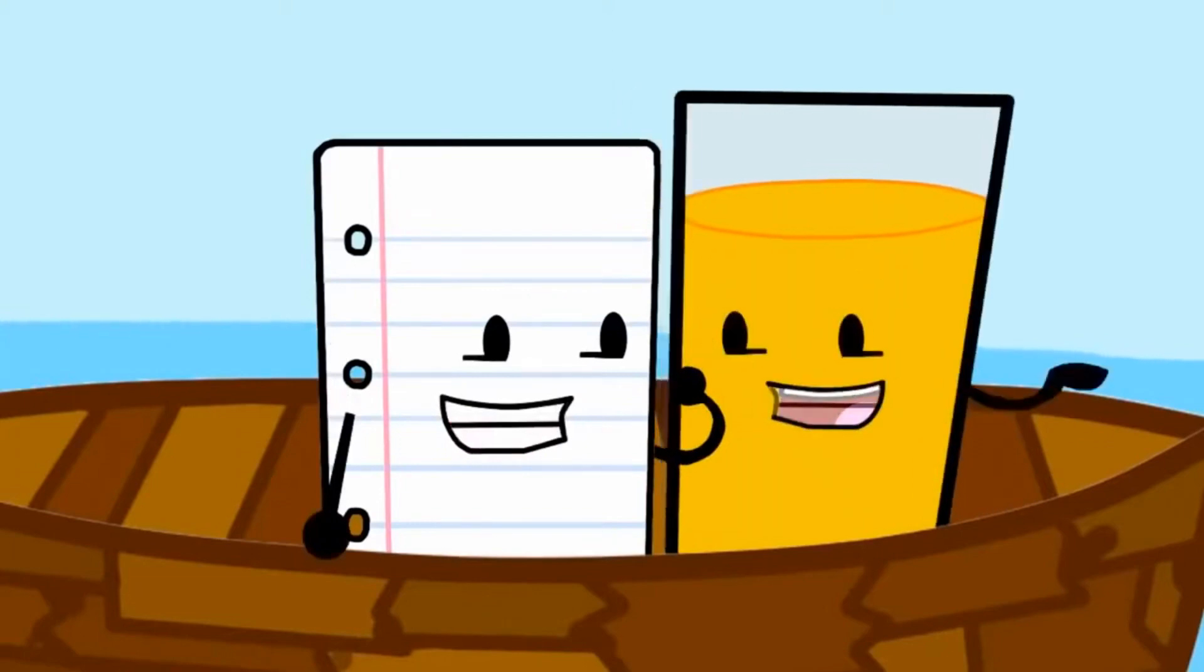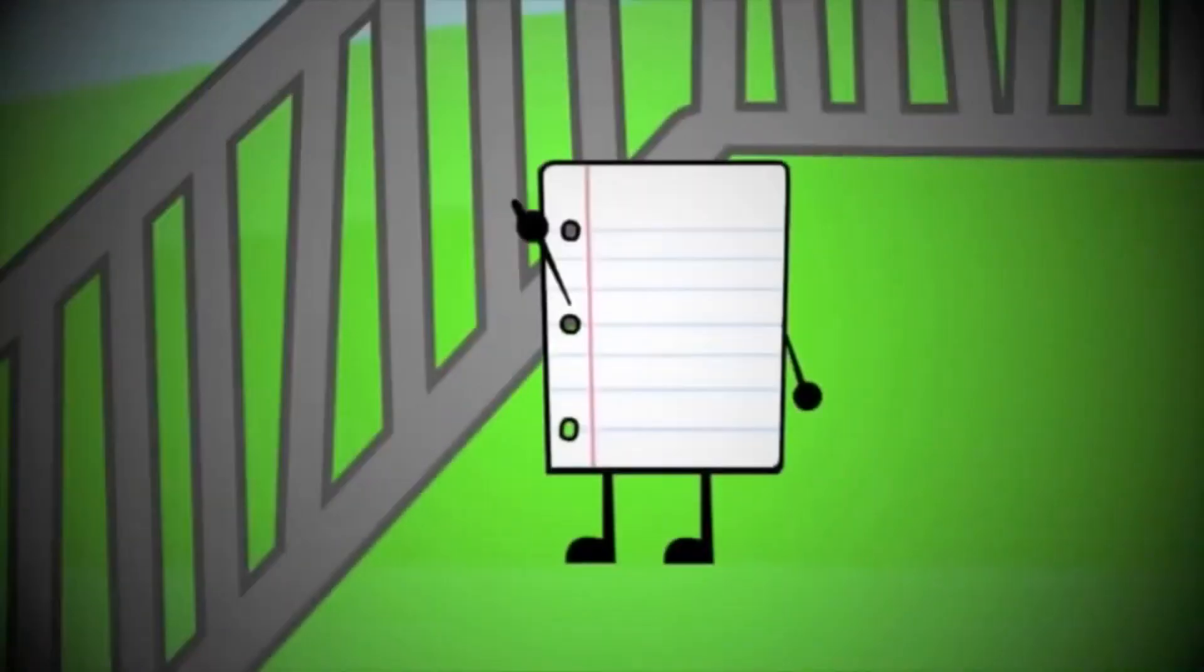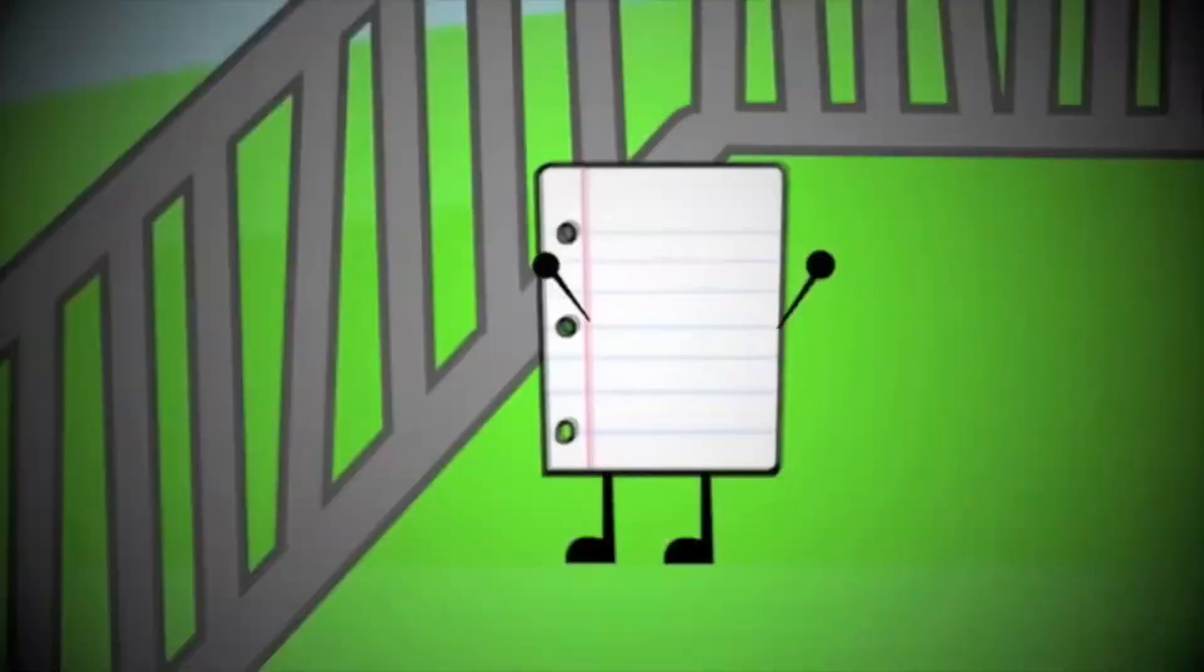I never understood that. They really should have disqualified Box, and since they weren't gonna let Microphone be in season 3, they really should have just let Paper join. Think about it.